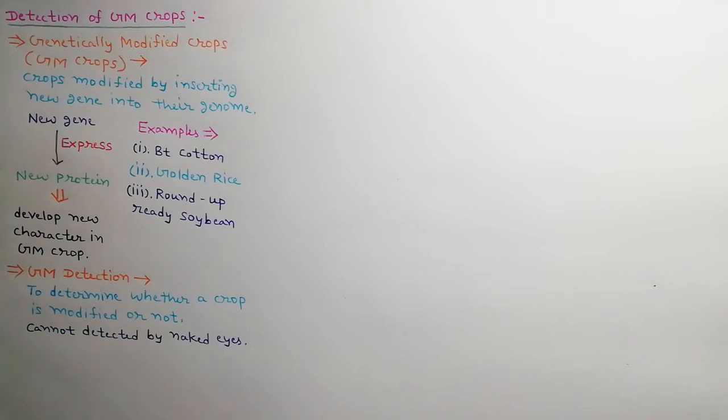GM detection is a determination of whether the given crop or its product is genetically modified or not. GM crops and normal crops cannot be differentiated by naked eyes.